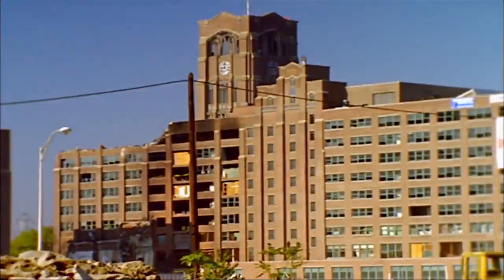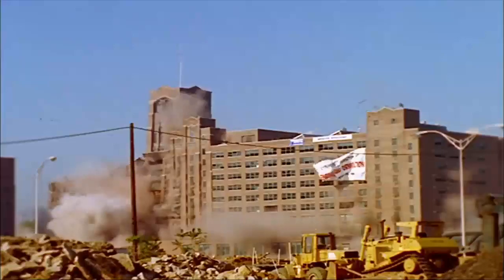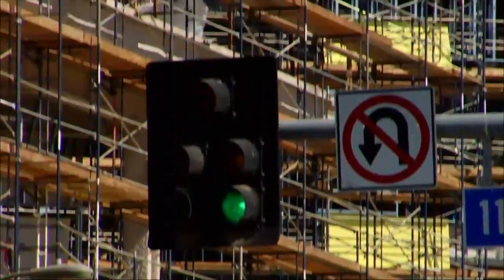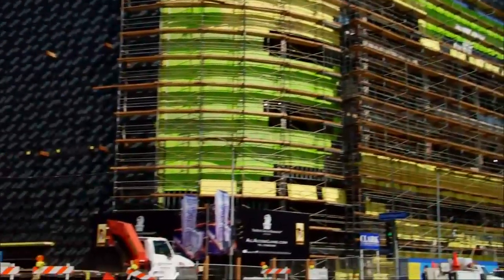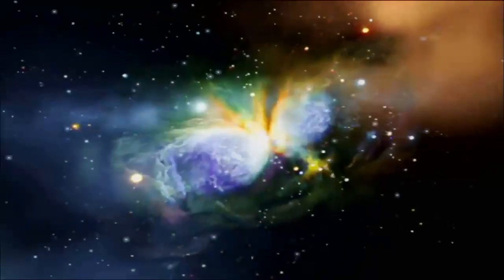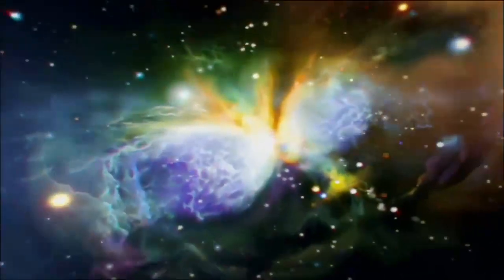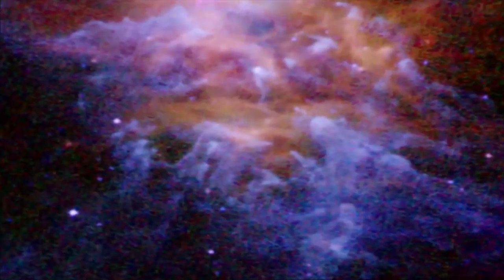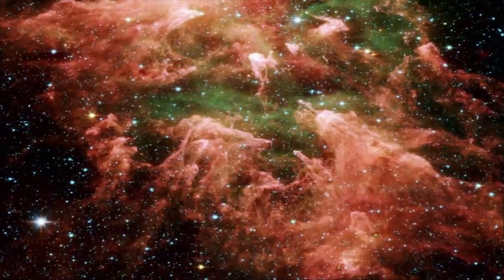Just as dying stars spew out clouds of dust and gas, dust and gas can come together to form stars. At a construction site, you have old buildings being torn down and new buildings going up. And it's very much the same in the Milky Way galaxy. You have old stars explode and they cast out new material, raw material, gas and dust that can be used to form new stars.